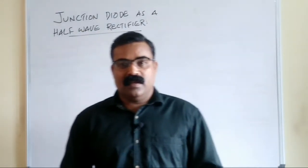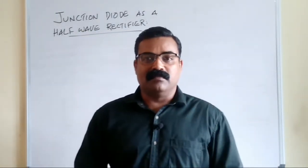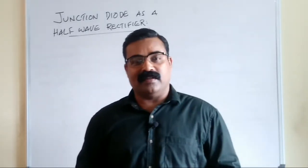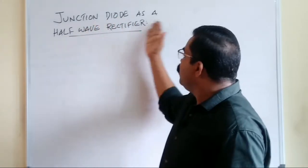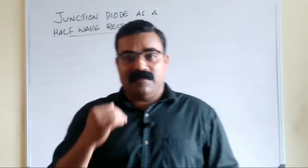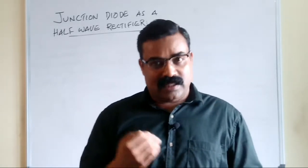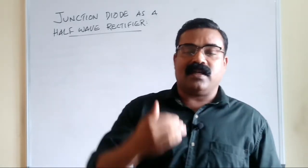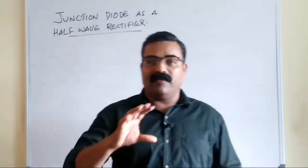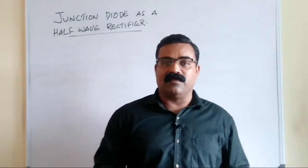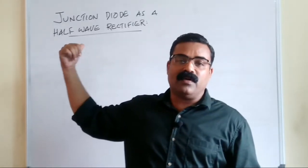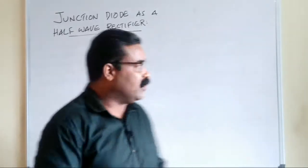Hello students, good morning, welcome to another physics class. Today we are going to see a very interesting topic: how a junction diode can be used as a half wave rectifier. It's one of the very important topics for your physics board exam, class 12. In the previous classes we have seen what is a PN junction and how forward bias and reverse bias work. Here we are going to see a junction diode working as a half wave rectifier.